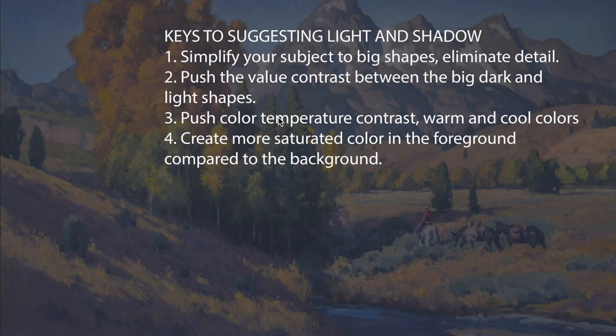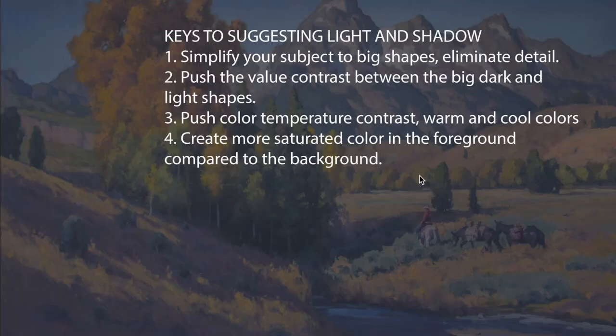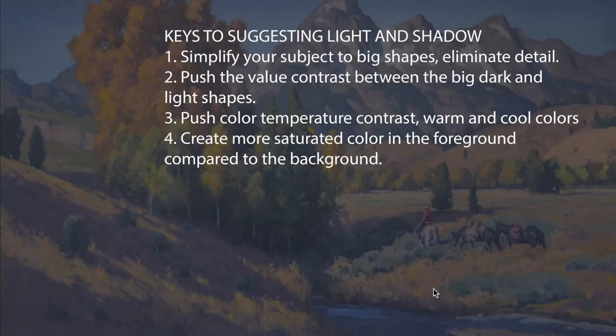Number two is push the value contrast between the big dark and light shapes. The more you can separate the difference between dark and light and create more contrast, the more suggestion of light. Number three is pushing color temperature contrast — the warm and cool colors. The more I can separate the temperature differences, the more I'm going to suggest sunlight. And last, create more saturated color in the foreground compared to the background. As things come up front, I'll have a bit stronger color, at least a bit more saturated.